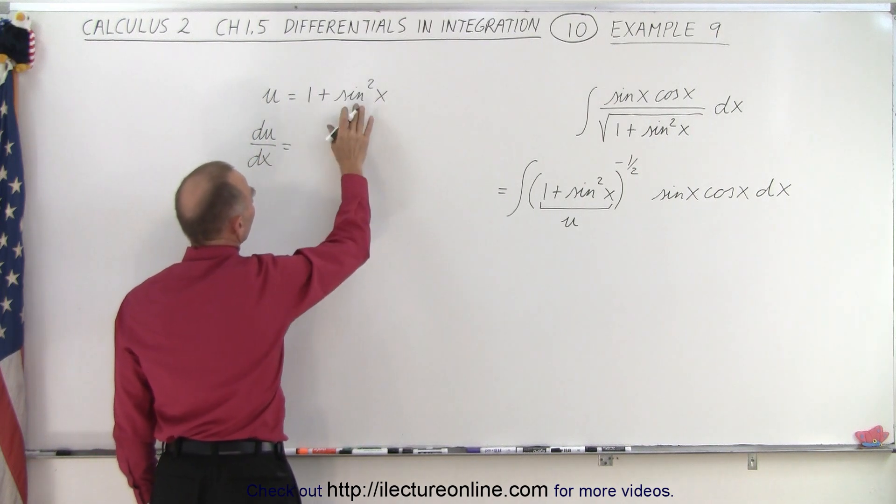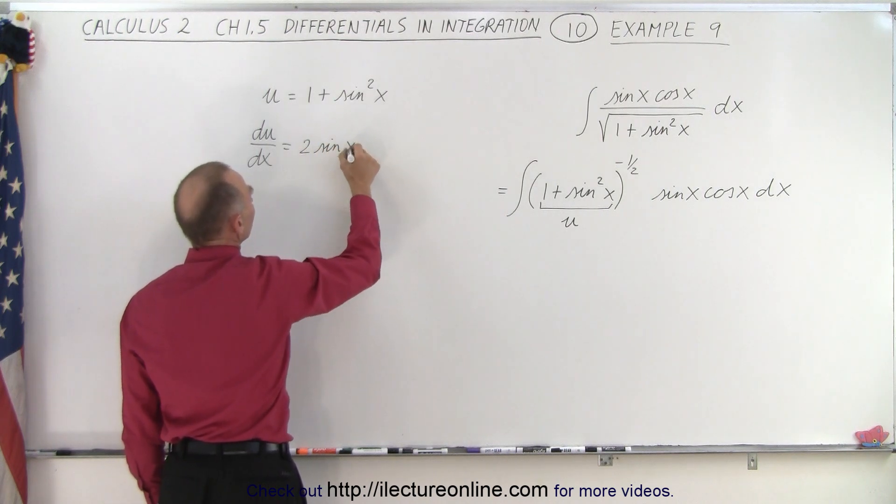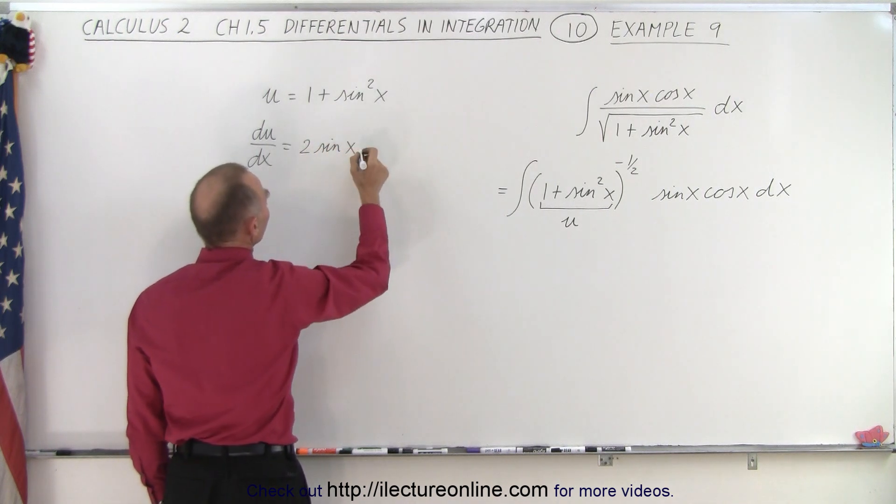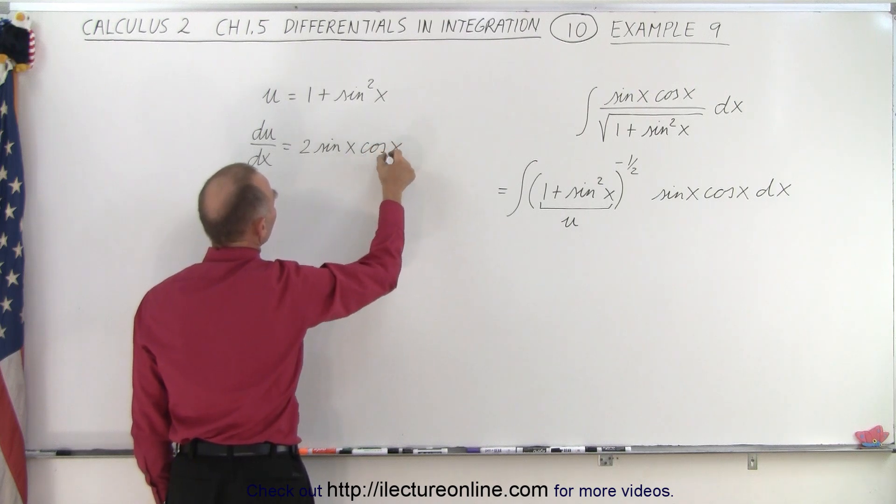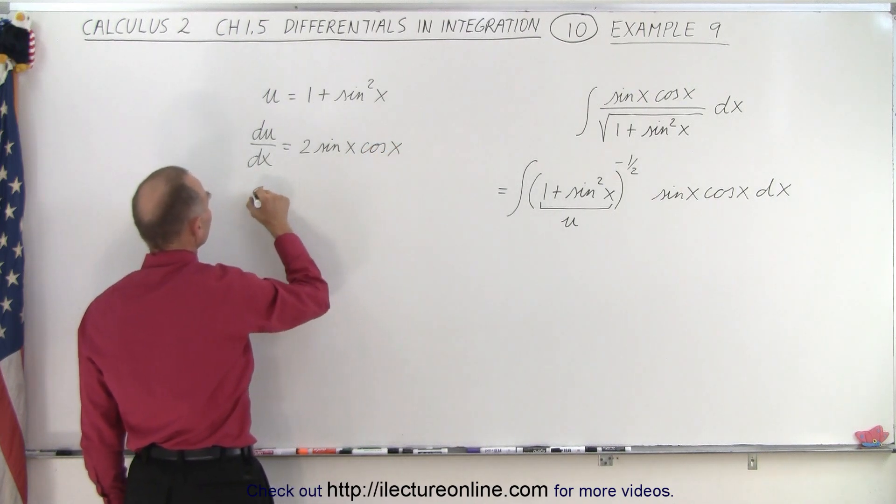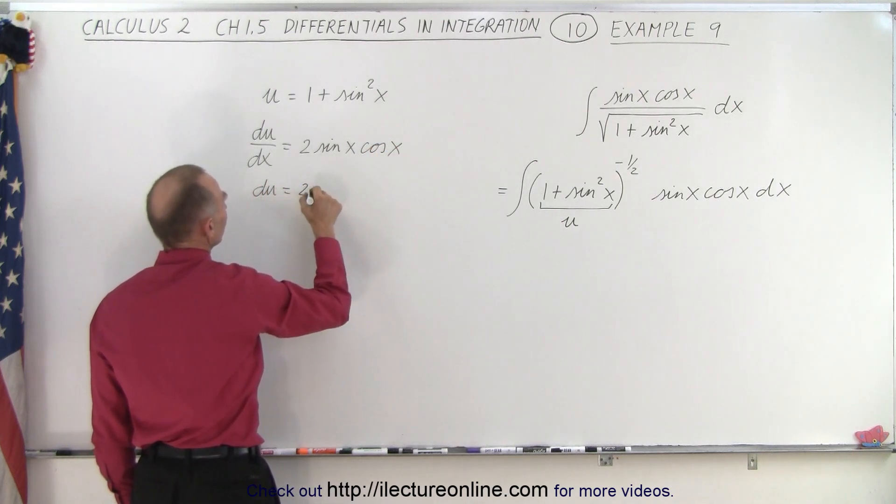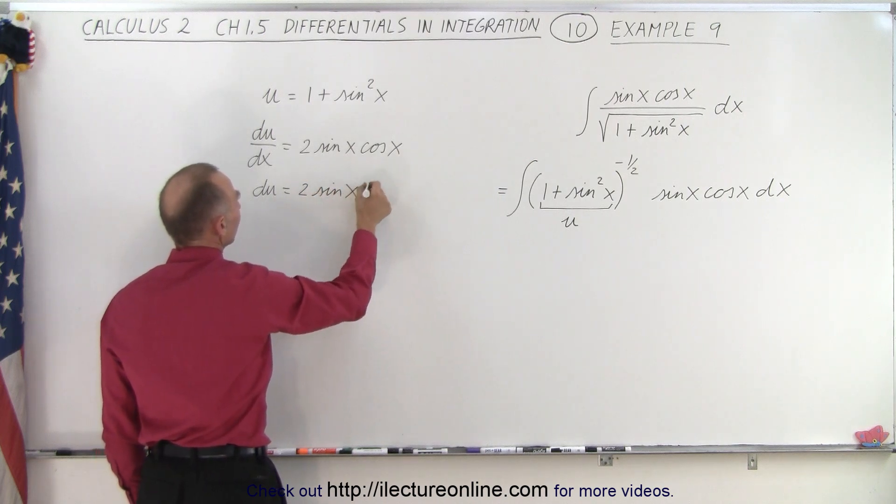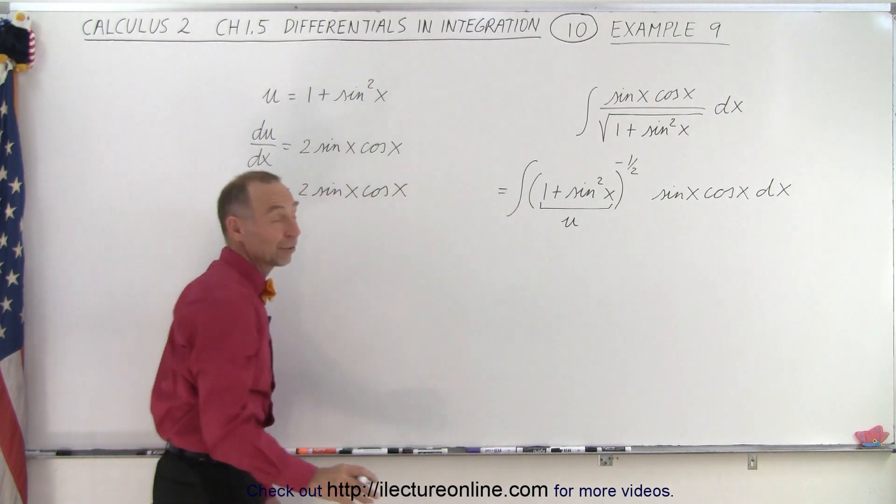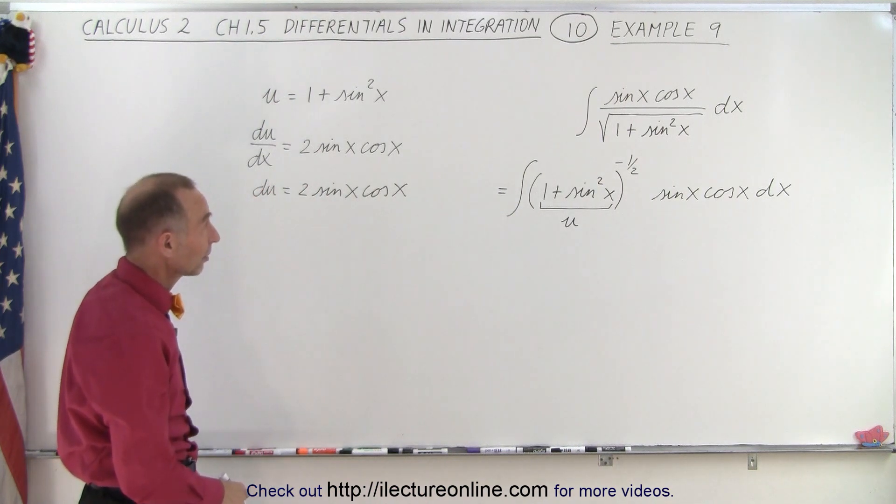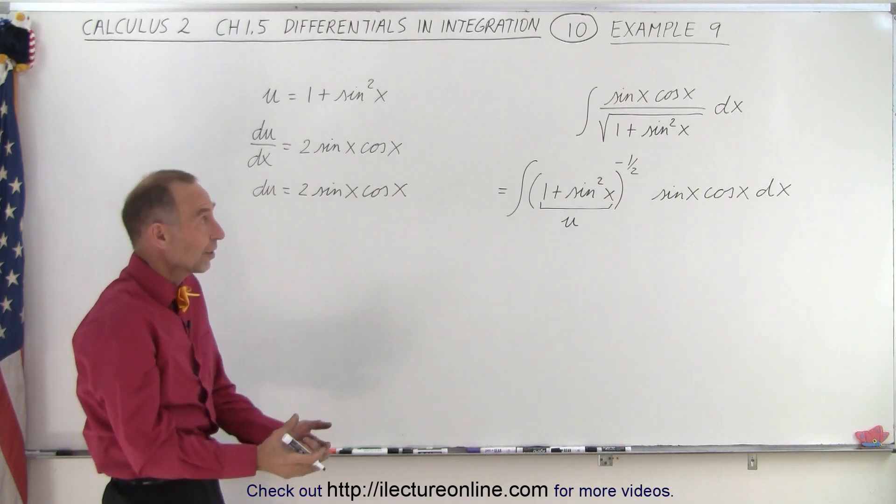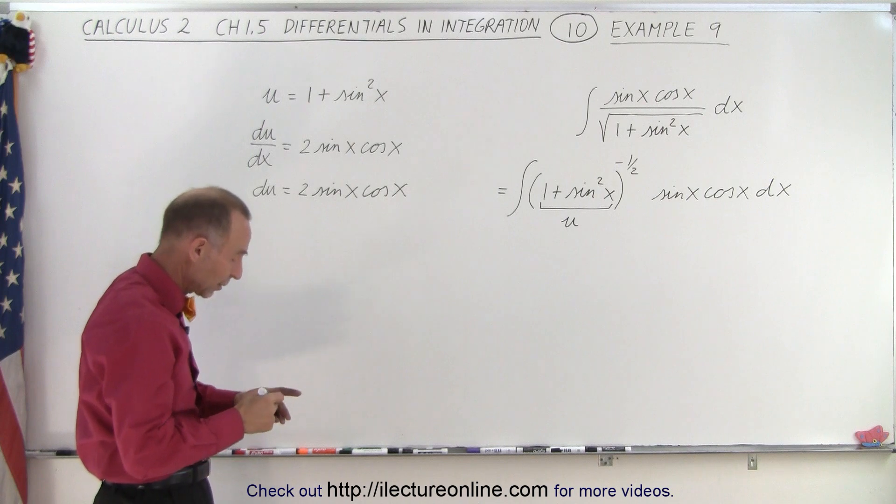The derivative of 1 is 0, and the derivative of this would be 2 times the sine to the first power of x times the derivative of the sine of x, which is the cosine of x. When I multiply by dx, I get du is equal to 2 times the sine of x times the cosine of x. Then you realize, that's why there was a sine of x and cosine of x in the numerator. If that wasn't there, then you couldn't integrate it.